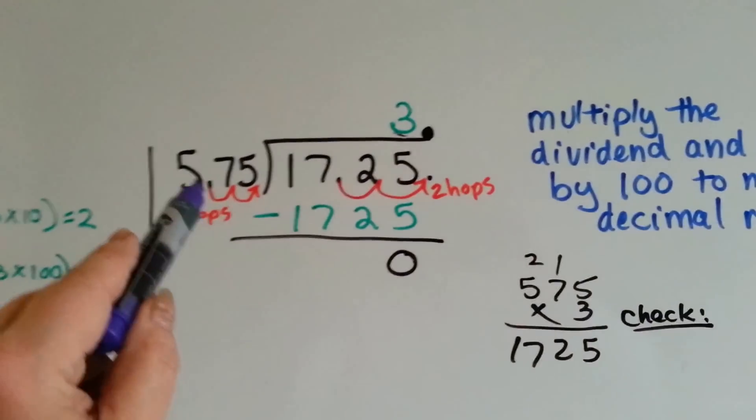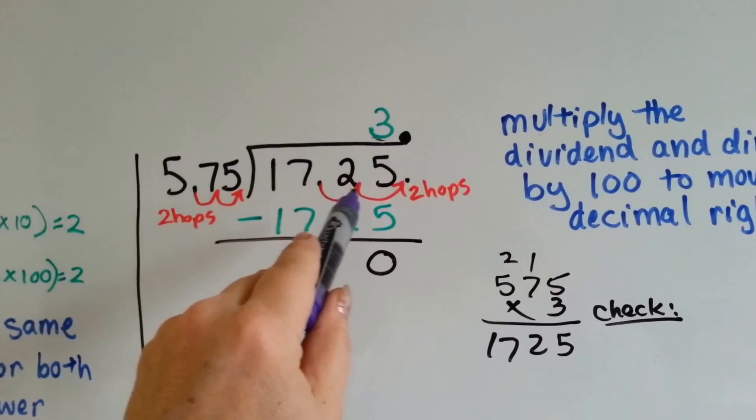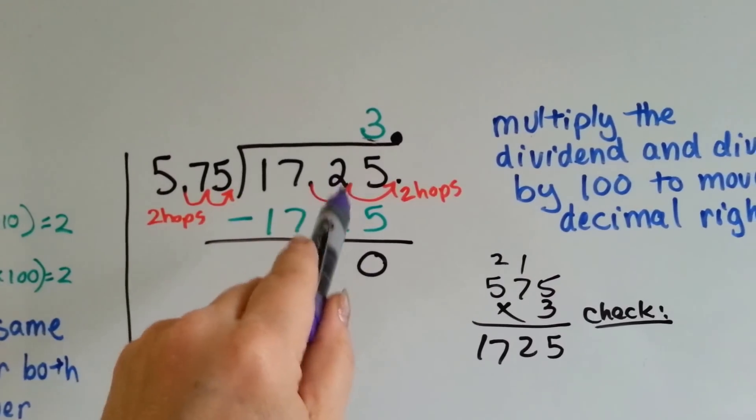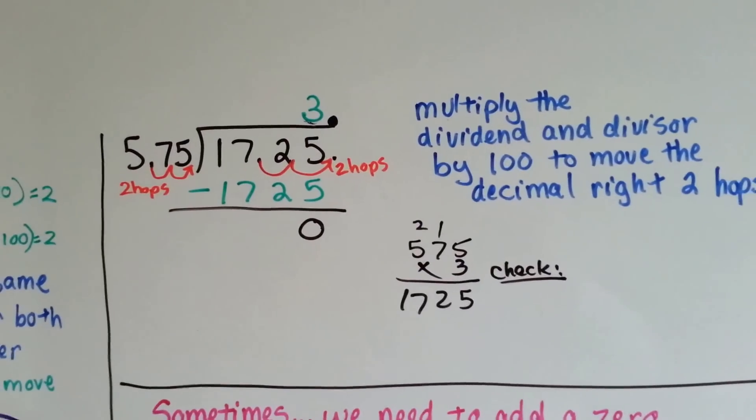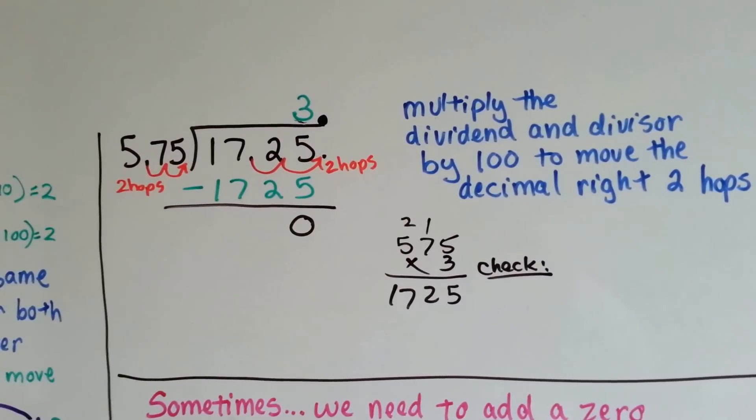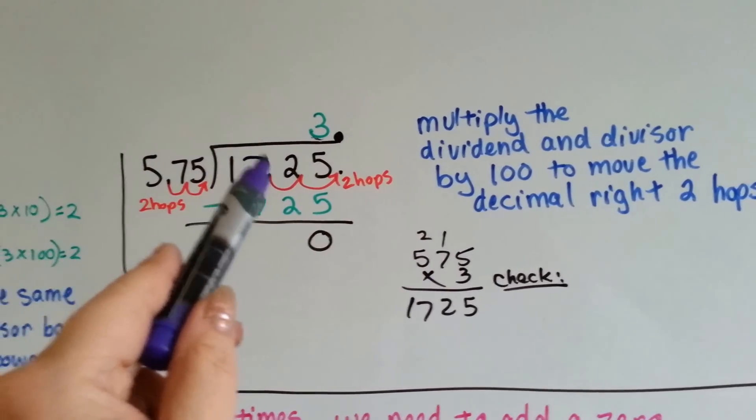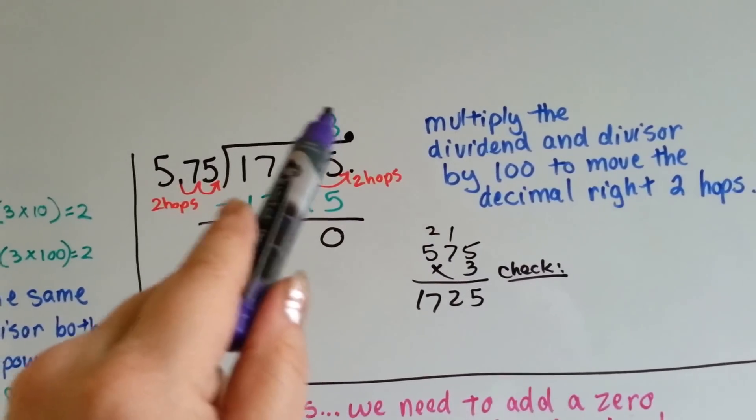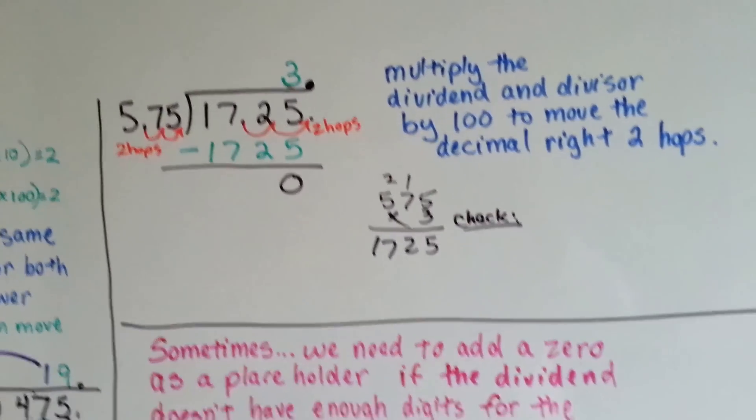If we have 5.75 and we've got 17.25, we can move it two hops and move the divisor, the dividend, two hops, and then just do our regular division as if it was 575 trying to fit into 1,725. We multiply the quotient times the divisor. If it comes out as the same number as the dividend, we know we did it correctly.